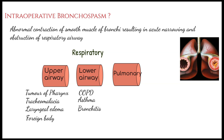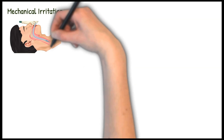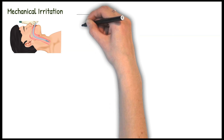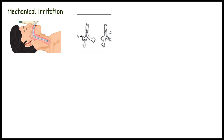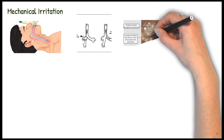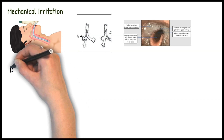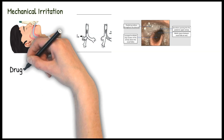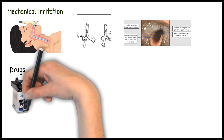Apart from respiratory causes, bronchospasm can also occur due to other causes such as mechanical irritation of the respiratory tract. This includes endotracheal intubation, endobronchial intubation where the tube is in the bronchus, and secretions in the airway, which can also provoke bronchospasm.